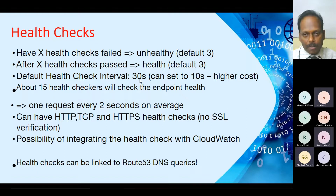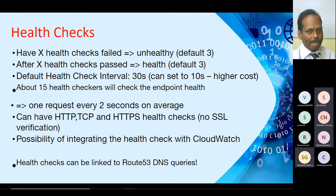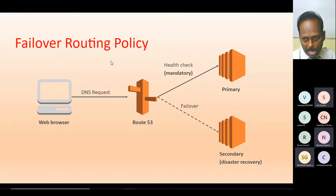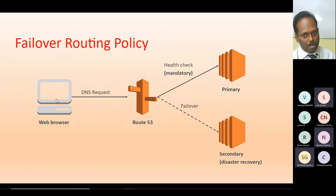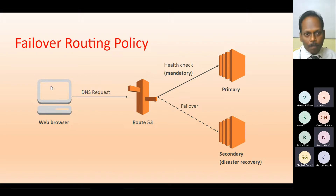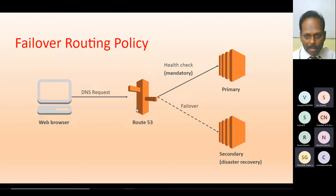I have two instances — one is the primary, the other is the failover server. I purposefully kept different content so you can see which server is responding. Later I'll stop the primary server to demonstrate that the same domain name automatically switches to the failover server. Now, to configure this, you need to set up health checks in Route 53. The default health check interval is 3 — you can reduce the interval for faster checks, but that incurs more charges.